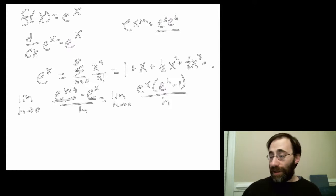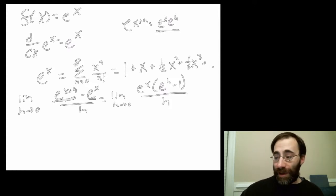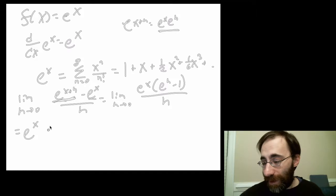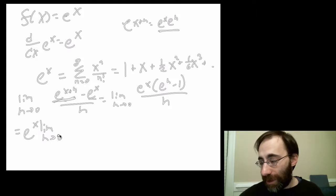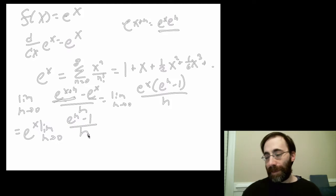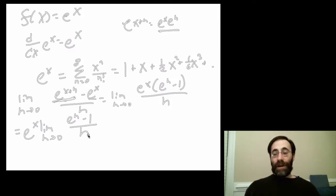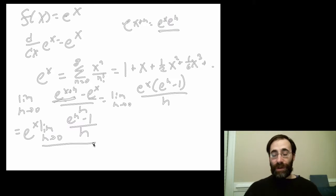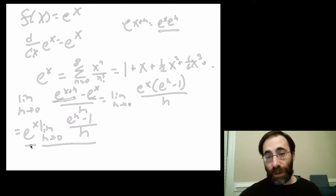Because e to the x has nothing to do with h, we can pull it out of the limit completely. So e to the x is out in front, and now the limit as h goes to 0 is of e to the h minus 1 over h. If this limit equals 1, we're done, because this gives us the e to the x we wanted.